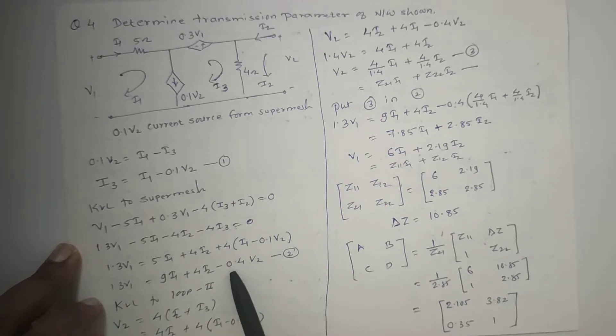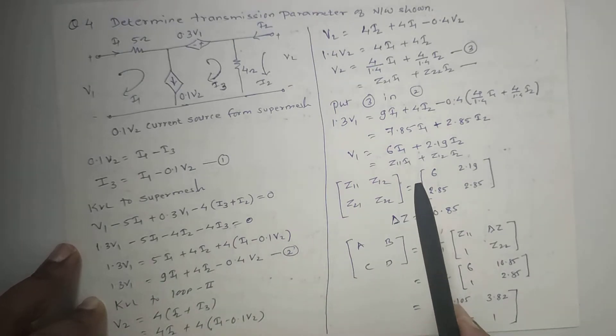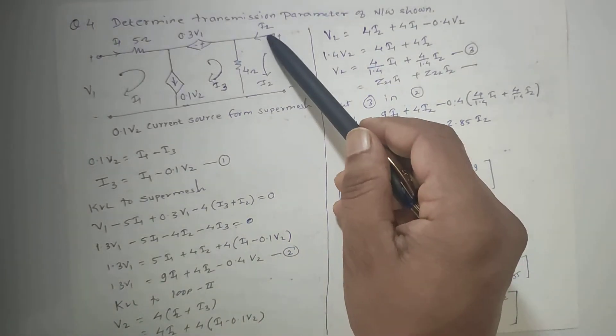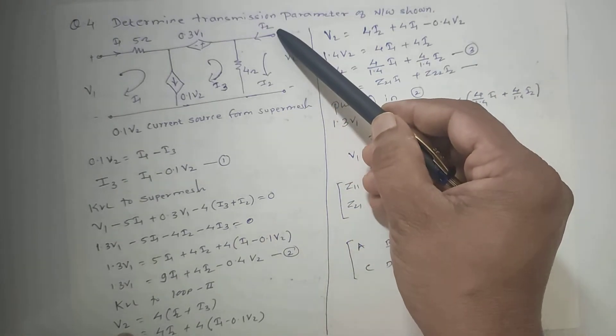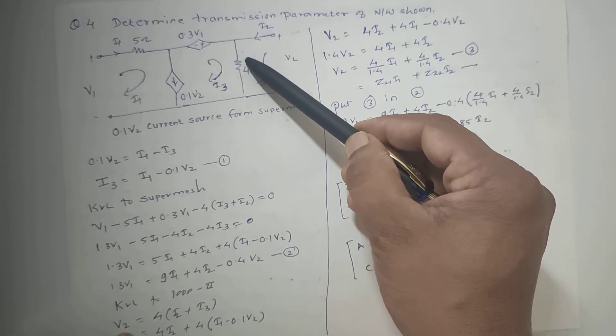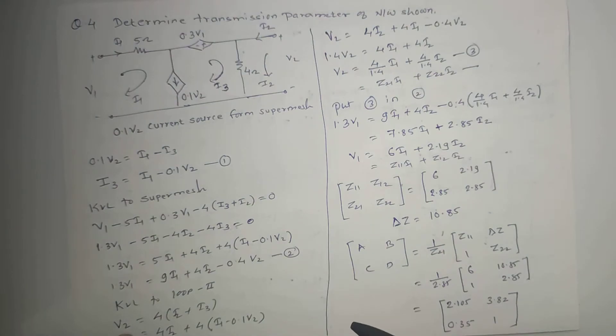We will get this equation: 1.3V1 minus 5I1 minus 4I2 minus I3 equals 0.3V2. Minus 4I2 minus 4I2 minus I3 equals 0.3V2. So V2 is equal to 4I2 plus I3.